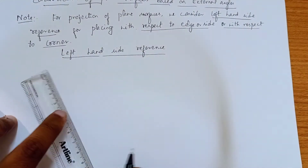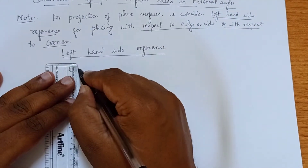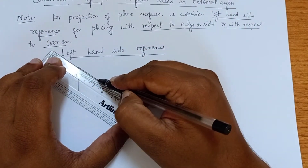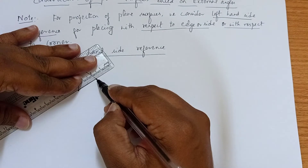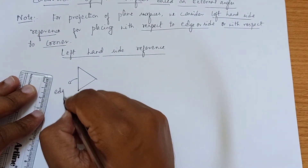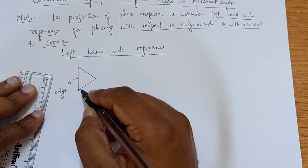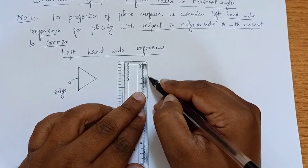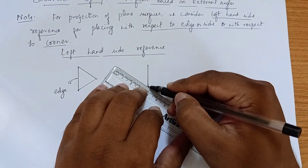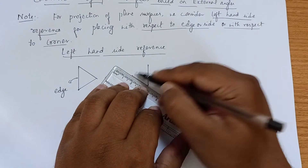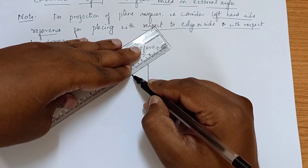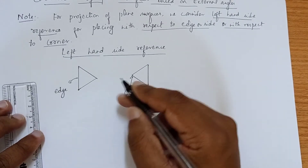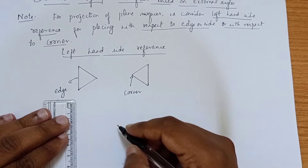I am drawing a rough sketch — just a rough sketch of a triangle. This is your edge, so this is the construction of a triangle with respect to the edge. The same triangle constructed with respect to the corner — you can see that the corner position is on the left-hand side. So this corner is on the left-hand side. The same can be done for a square.